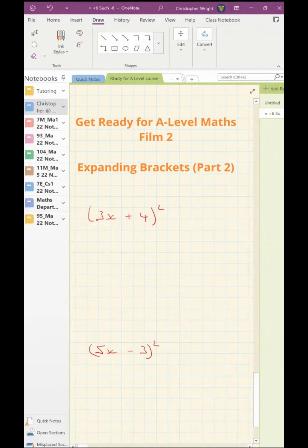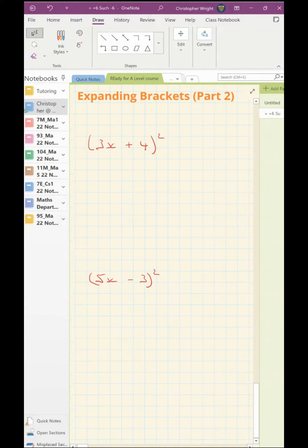We're going to look at two special cases. The first one is where you have a binomial squared, like 3x plus 4 squared. It's tempting to think that you can just square each of those terms in the bracket. You cannot.